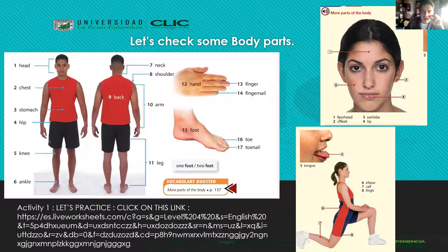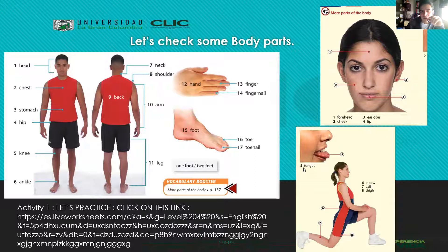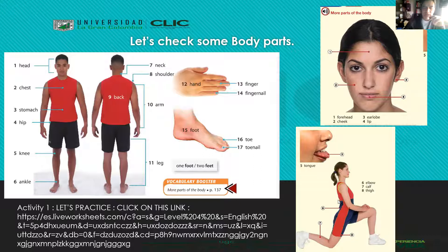I repeat: forehead - frente, cheek - mejilla, earlobe - lóbulo, lip - labio, tongue - lengua, elbow - codo, calf - pantorrilla, thigh - muslo. That will be parts of the body.